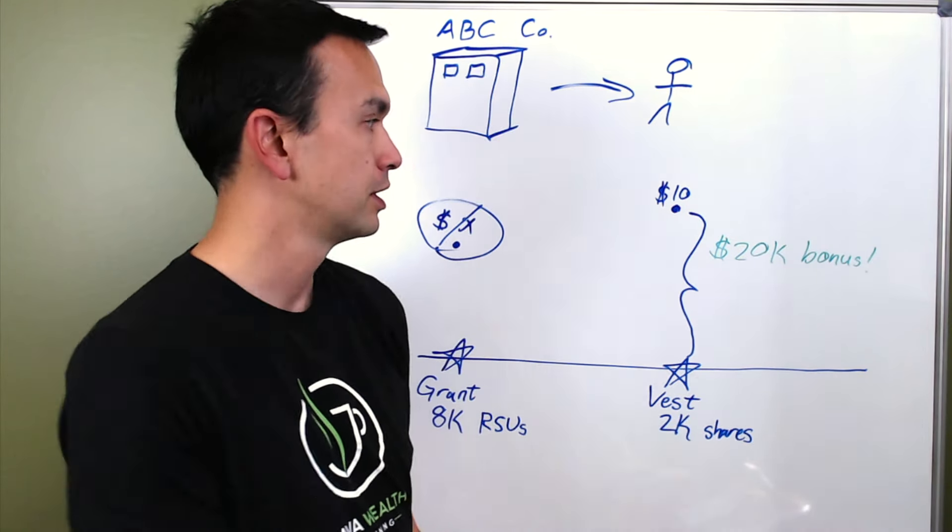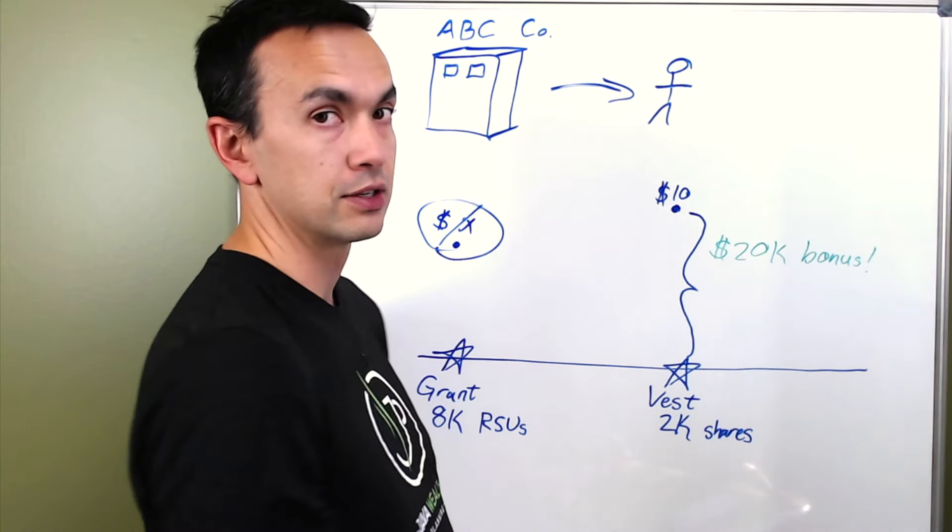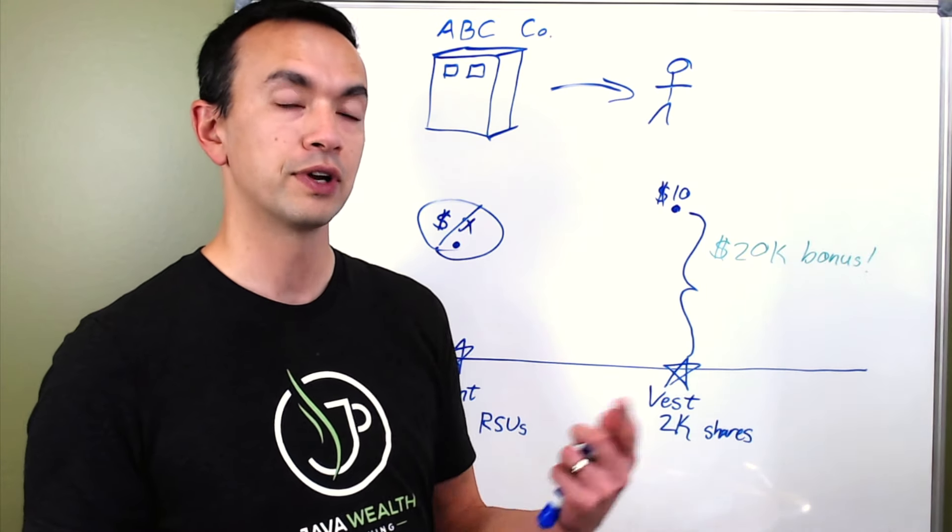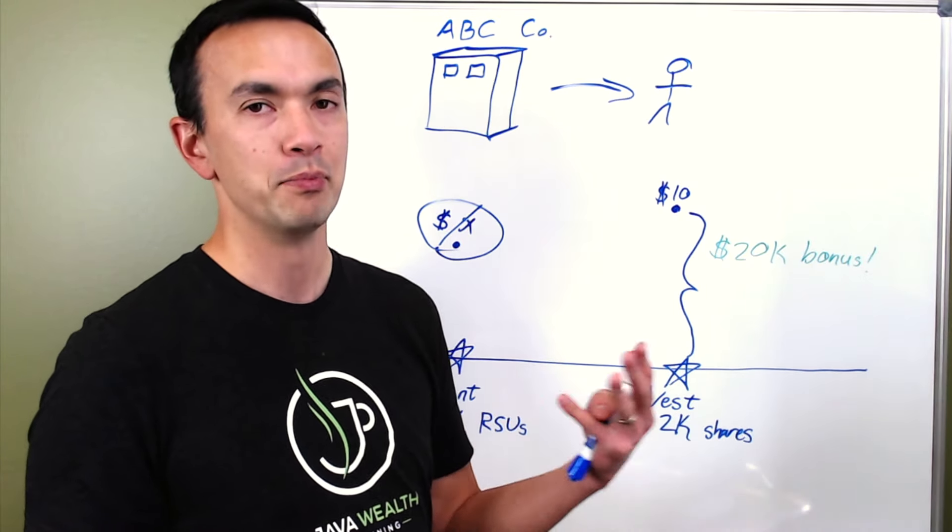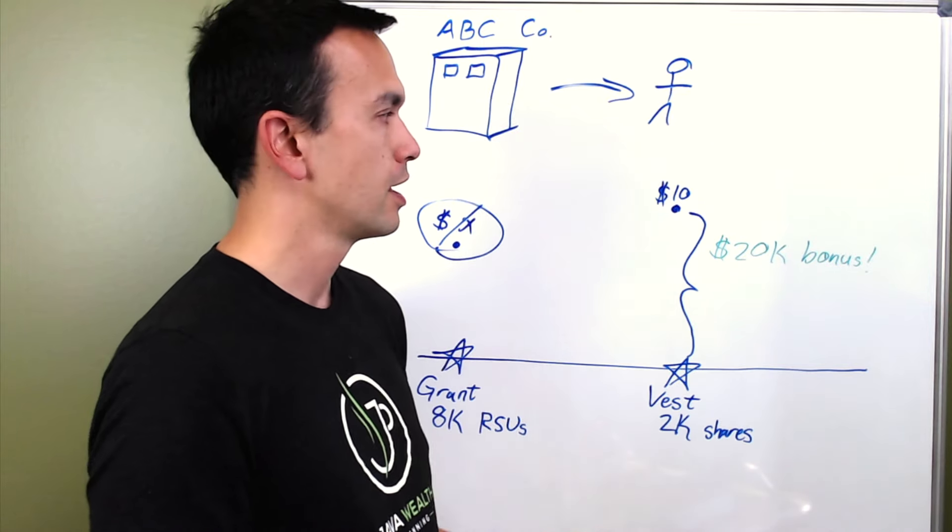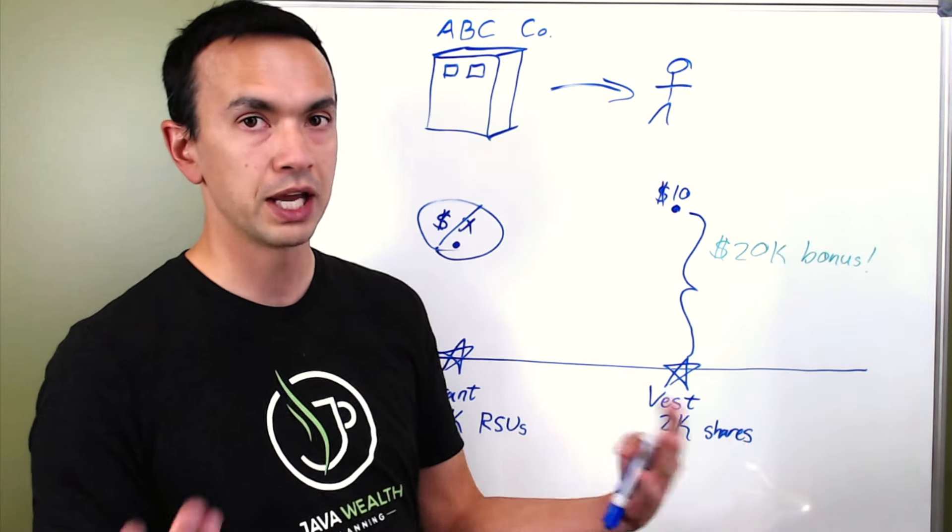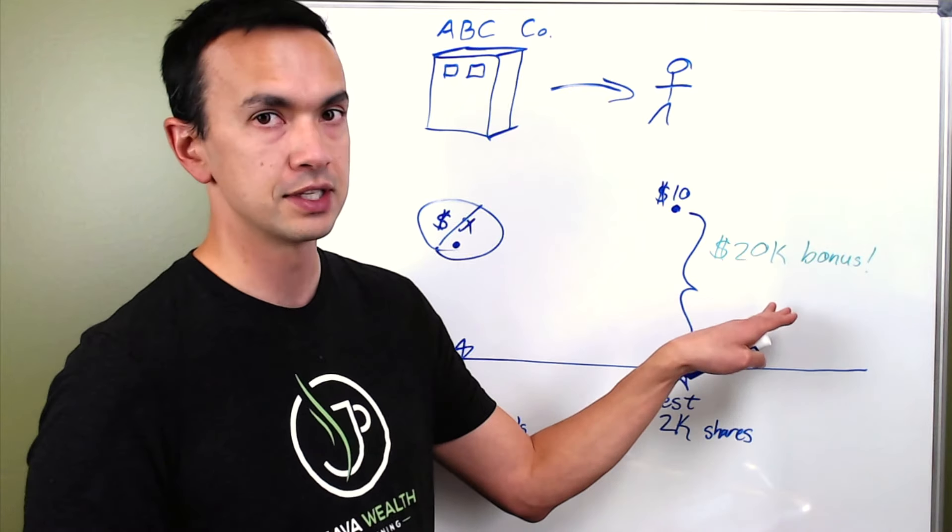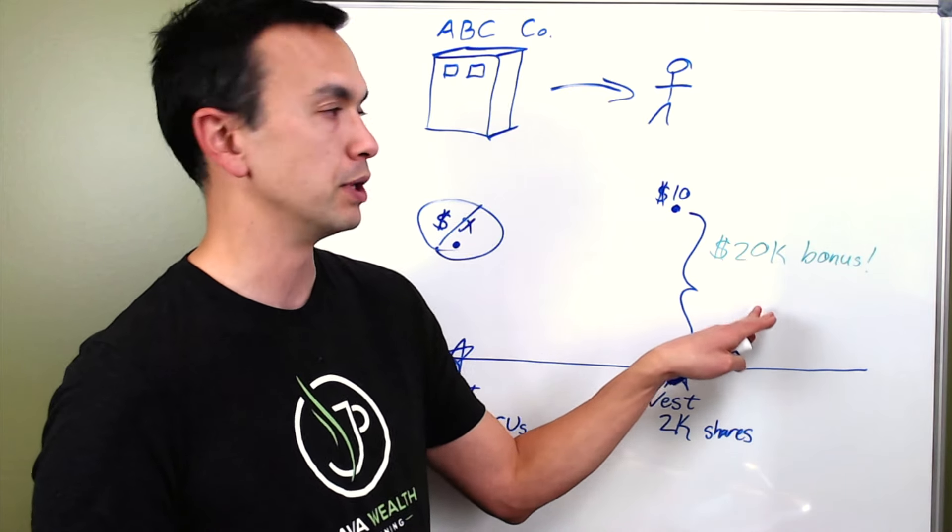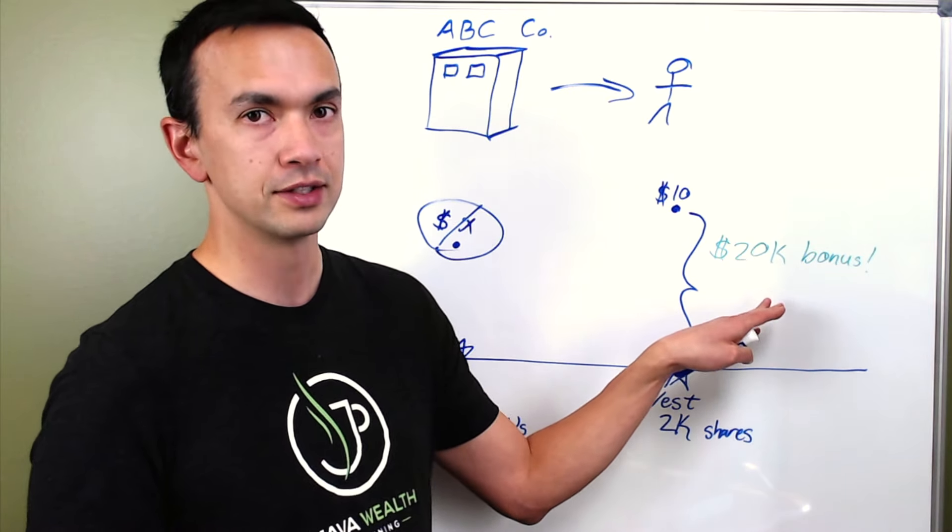So just like a cash bonus, what that means is that this $20,000 is subject to federal taxes, state taxes, Medicare, and Social Security. And then also just like with your paycheck, then that means that taxes will need to be withheld from this dollar amount.